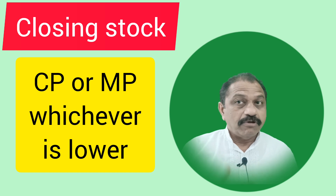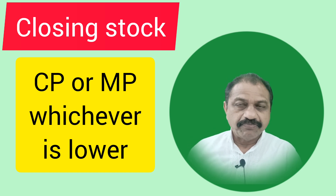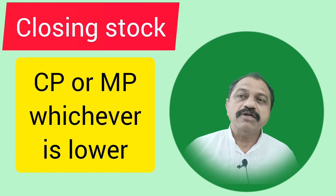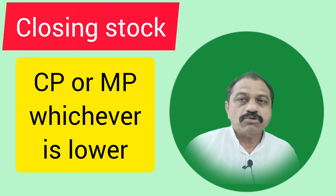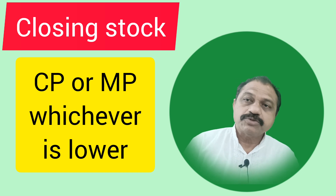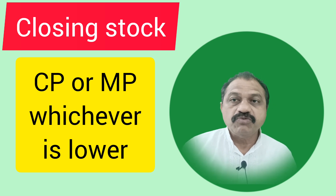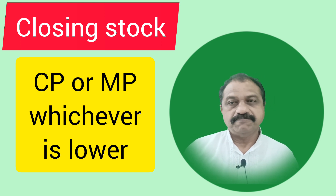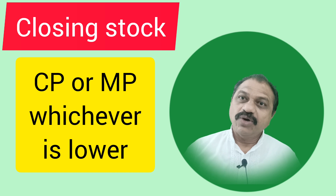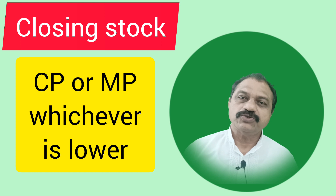If cost price is 10,000 and market price is 8,000, then market price of 8,000 will be the value of closing stock. On the other hand, if cost price is 10,000 and market price is 13,000, then cost price will be the value of closing stock. Therefore, value of closing stock should be taken as cost or market price, whichever is lower.